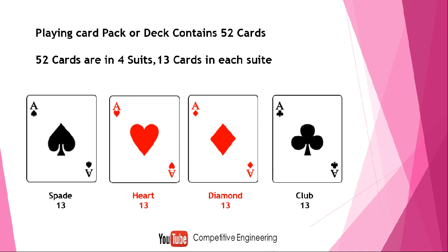So we can conclude: 52 cards, four suits, 13 cards in each suit, and there are a total of 26 black cards and 26 red cards. Now going into the spade suit in detail — there are 13 cards: one Ace, then two, three, four, five, six, seven, eight, nine, ten, then J, Q, and K, with the spade symbol on each card.